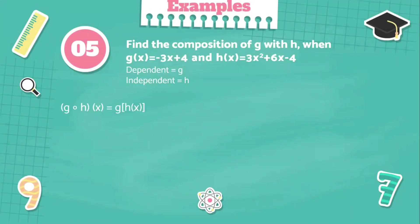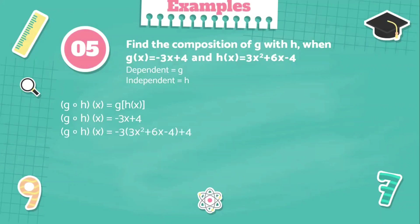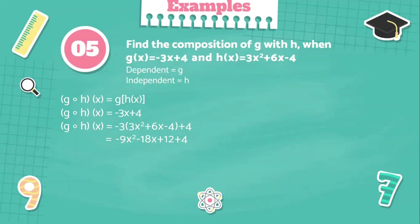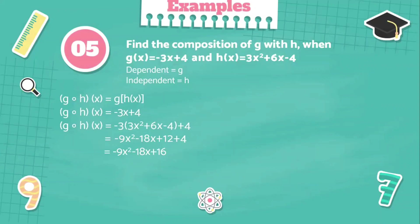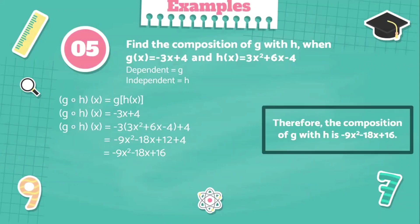Solution: g circle h of x equals g of h of x. Our dependent function is negative 3x plus 4. We're going to substitute the x of the dependent function by the independent function, so it will be negative 3 times the quantity 3x squared plus 6x minus 4, plus 4. Negative 3 times the quantity 3x squared plus 6x minus 4 equals negative 9x squared minus 18x plus 12. Bringing down plus 4, and performing 12 plus 4 equals 16, our answer will be negative 9x squared minus 18x plus 16. Therefore, the composition of g with h is negative 9x squared minus 18x plus 16.